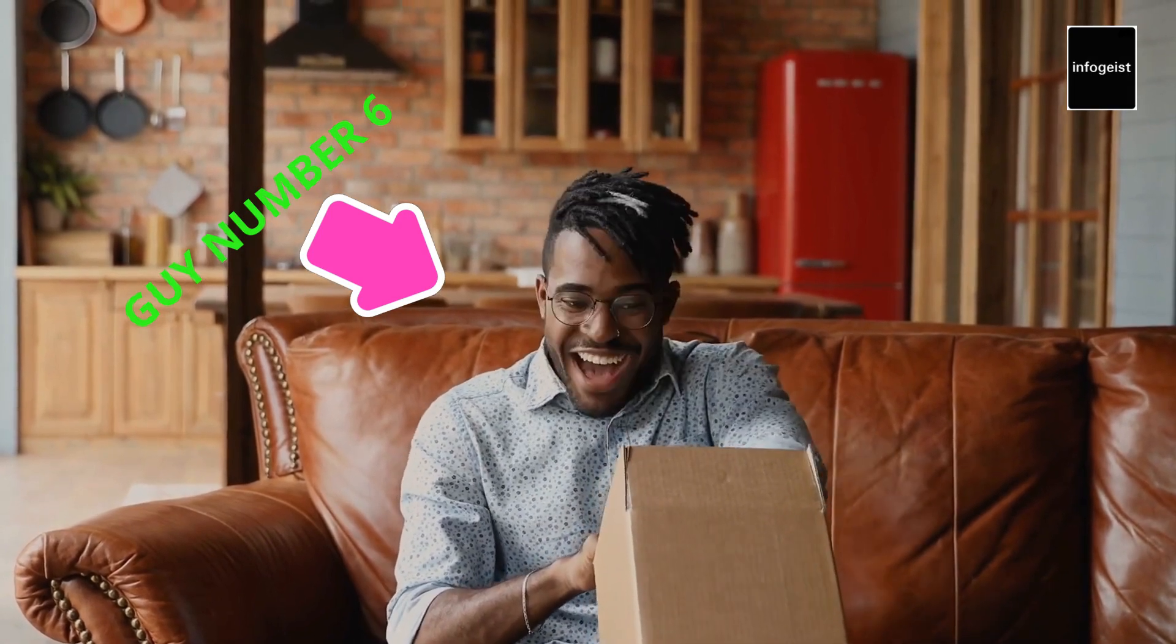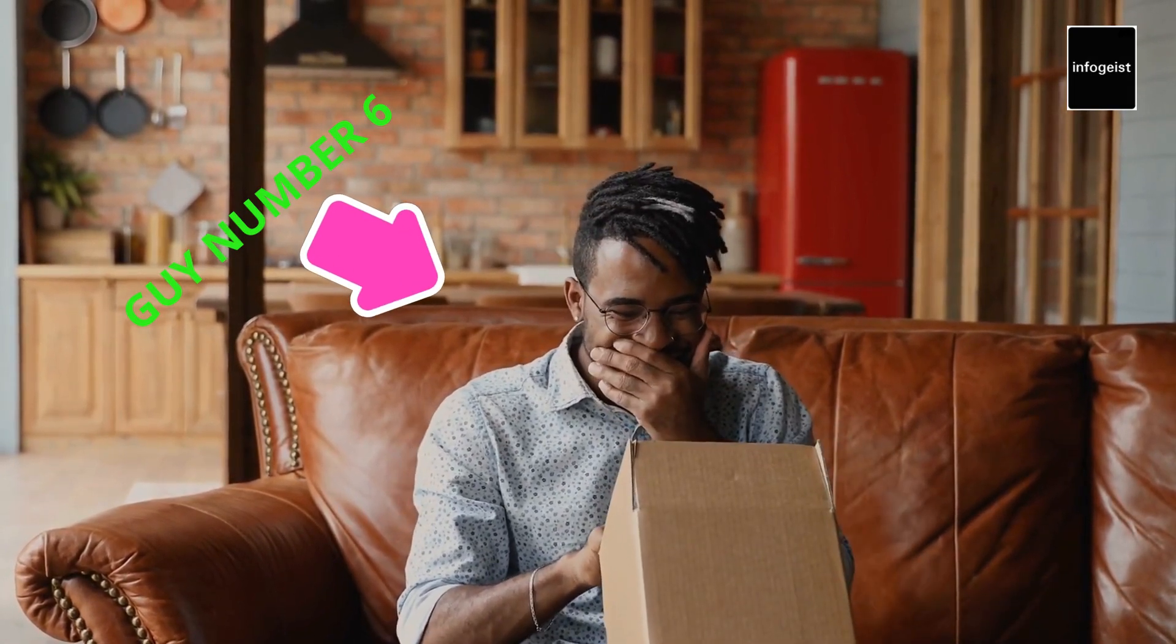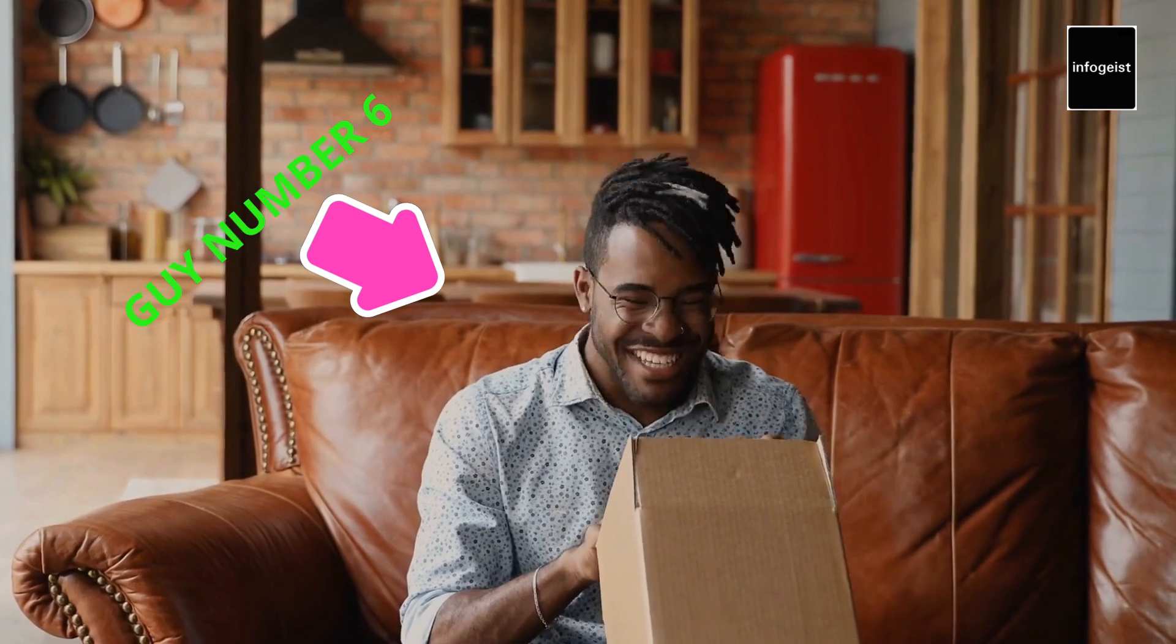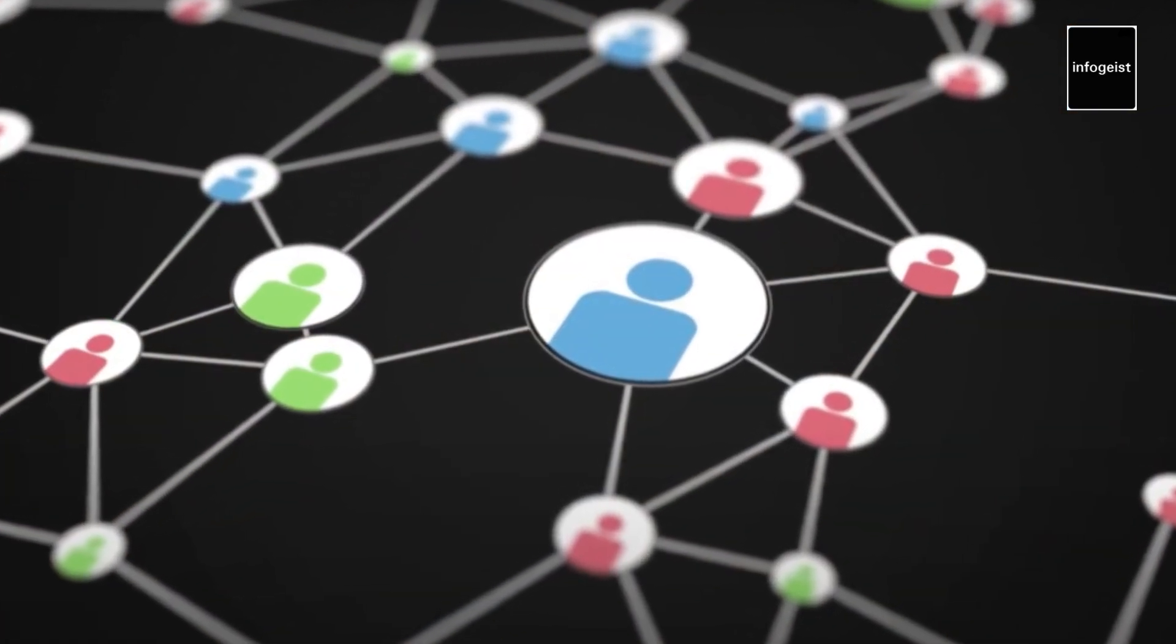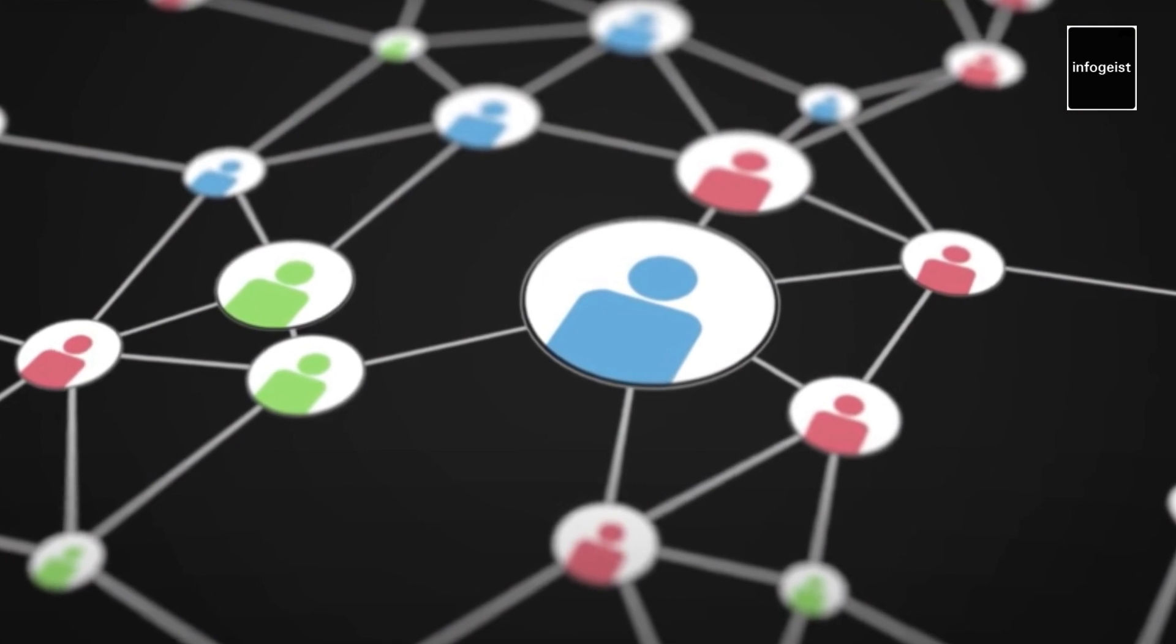Remarkably, the packages reached the target person in an average of just six connections, providing empirical evidence for the small world phenomenon. Milgram's work offered a tangible demonstration of how social networks could connect individuals across vast distances.